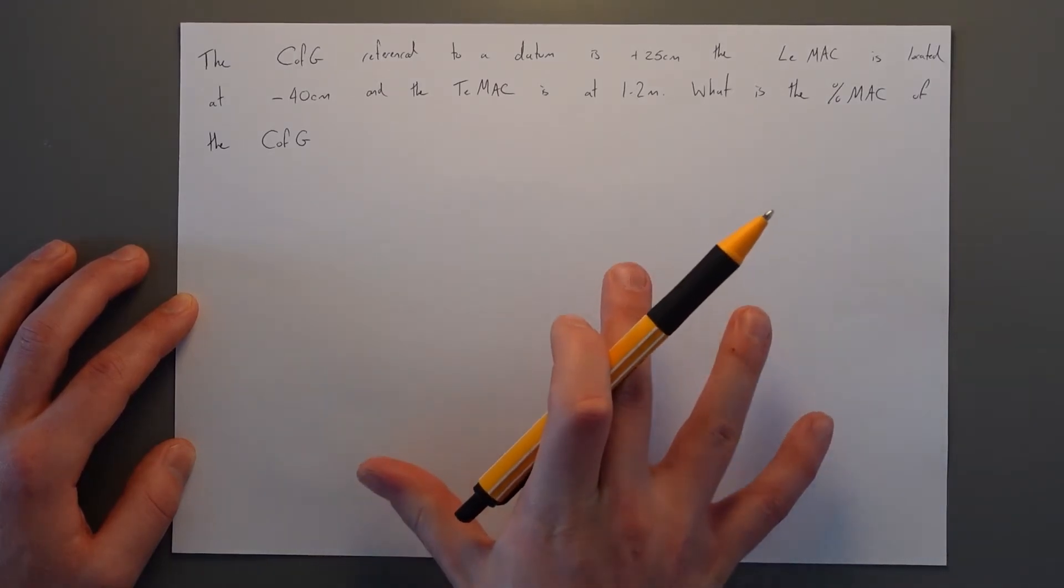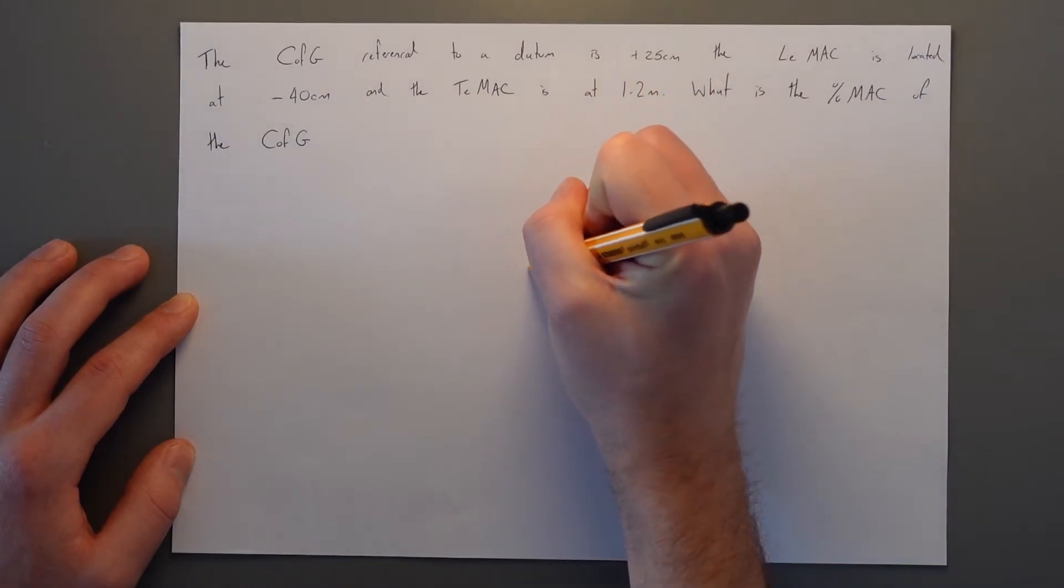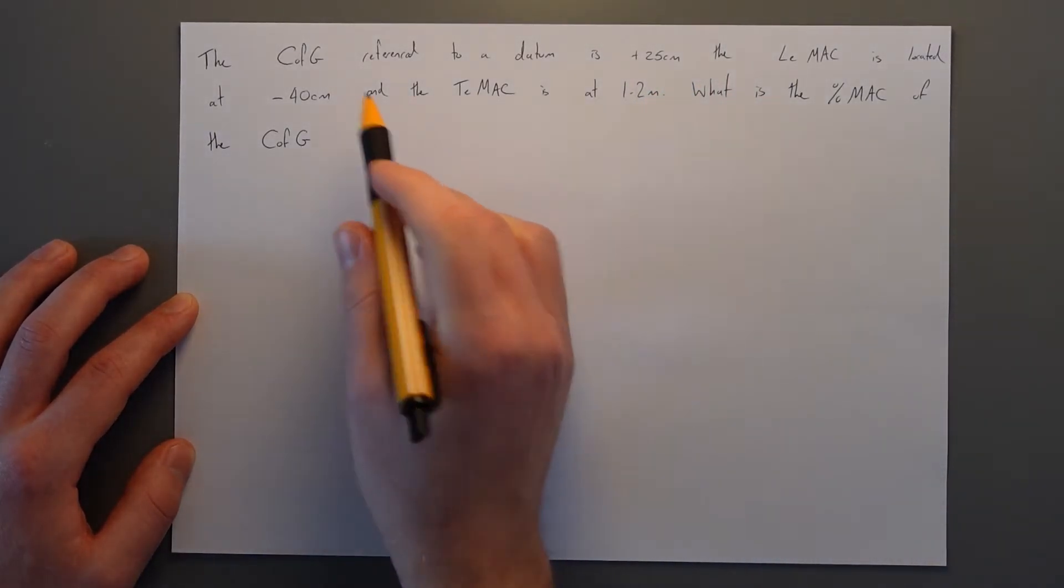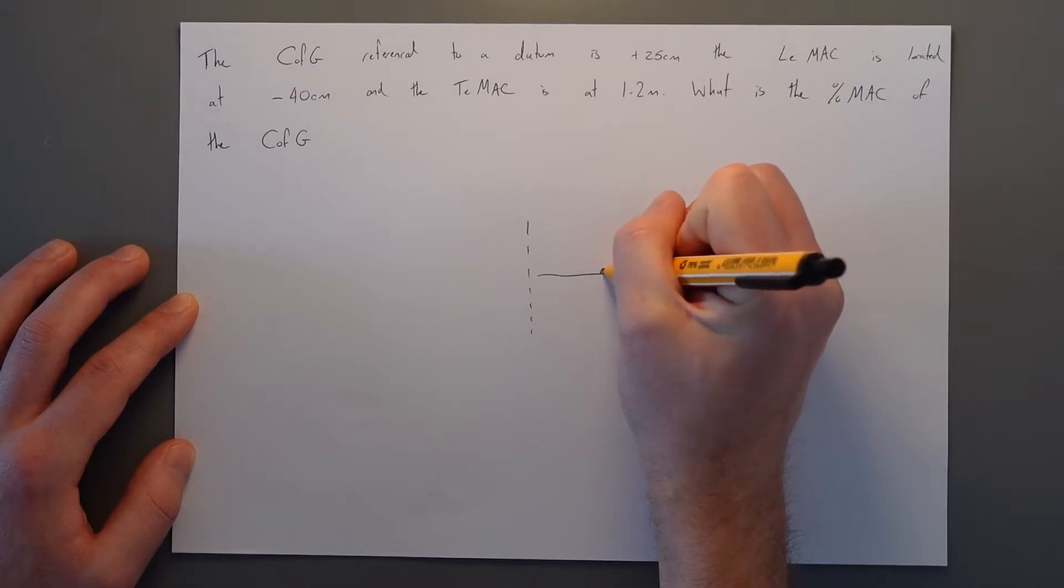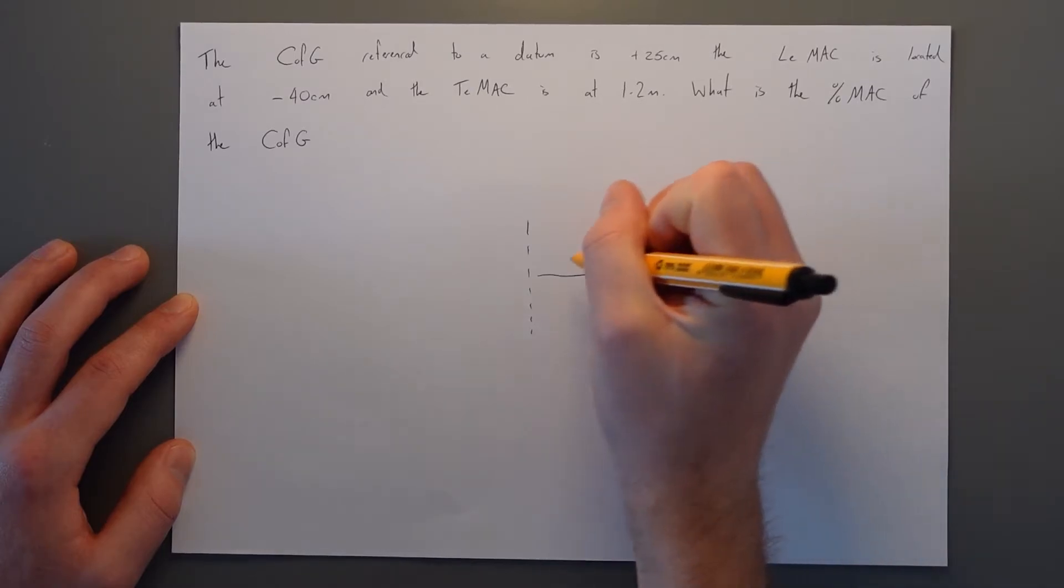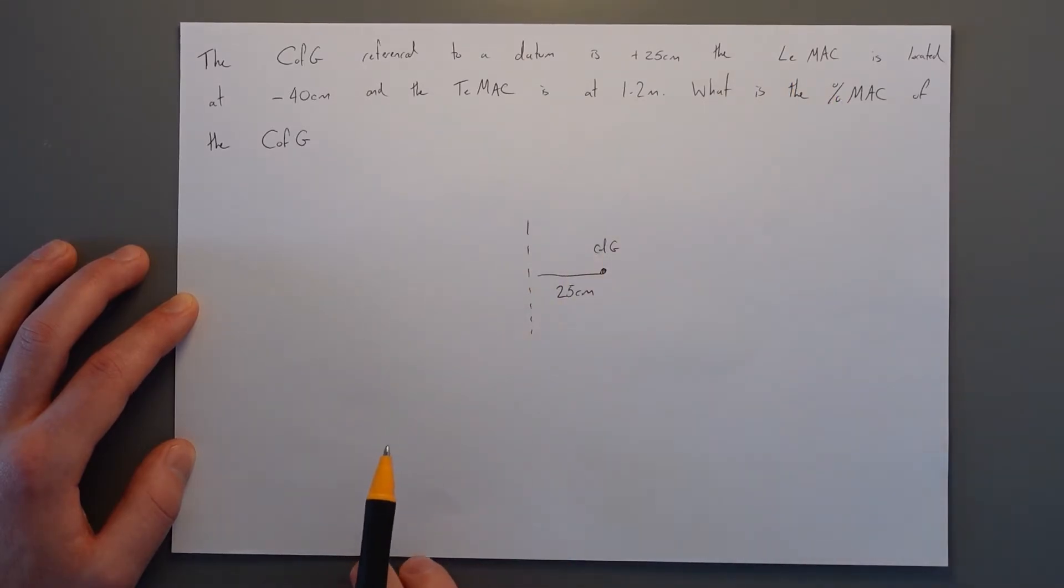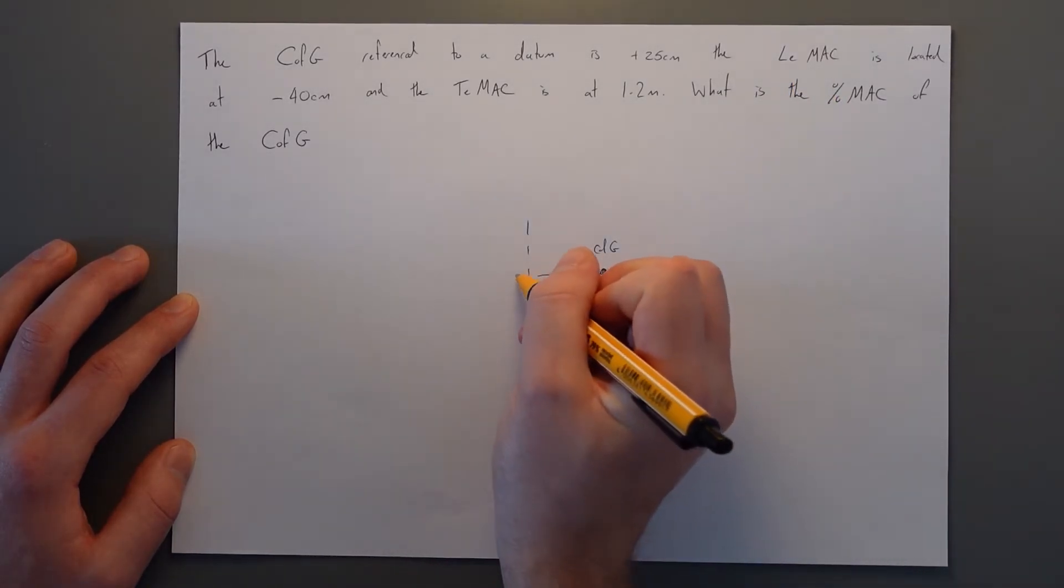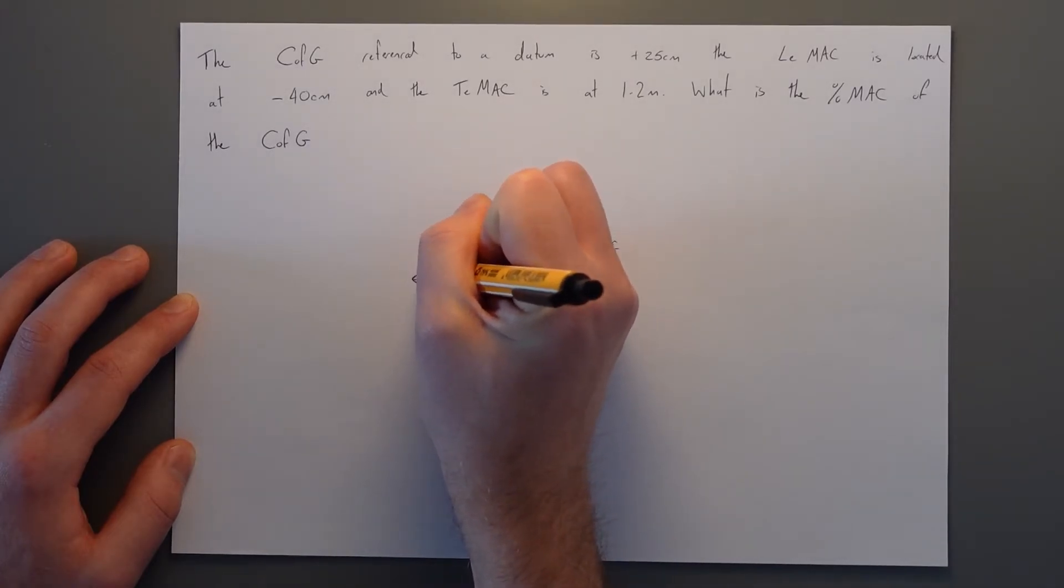So we draw the picture. We've got our datum point, we're just going to pop that in as a line here. The centre of gravity is plus 25, plus to the right. So our centre of gravity is over here and that's 25 centimetres. Our leading edge MAC is located at minus 40 so that's over here and that's the start of our wing over here.